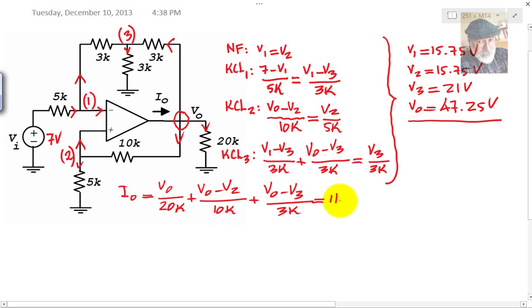That current is 1156 milliamps. We are ready to compute P0, the output power of that op-amp, which is just the product of V0 and I0. That is 546 milliwatts.